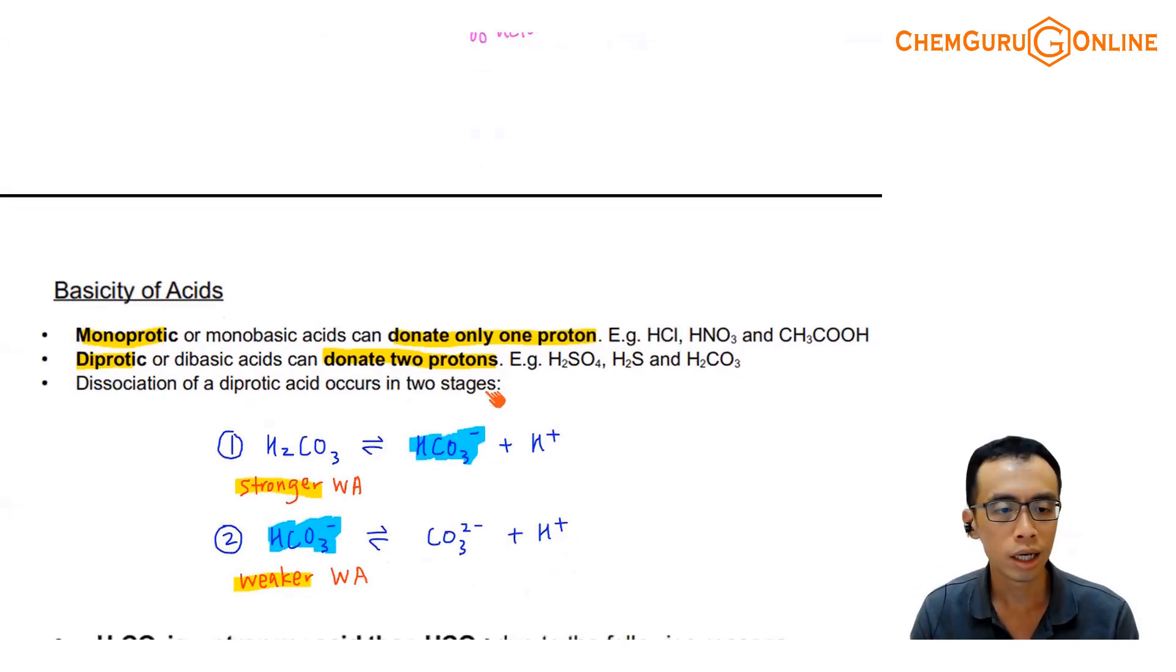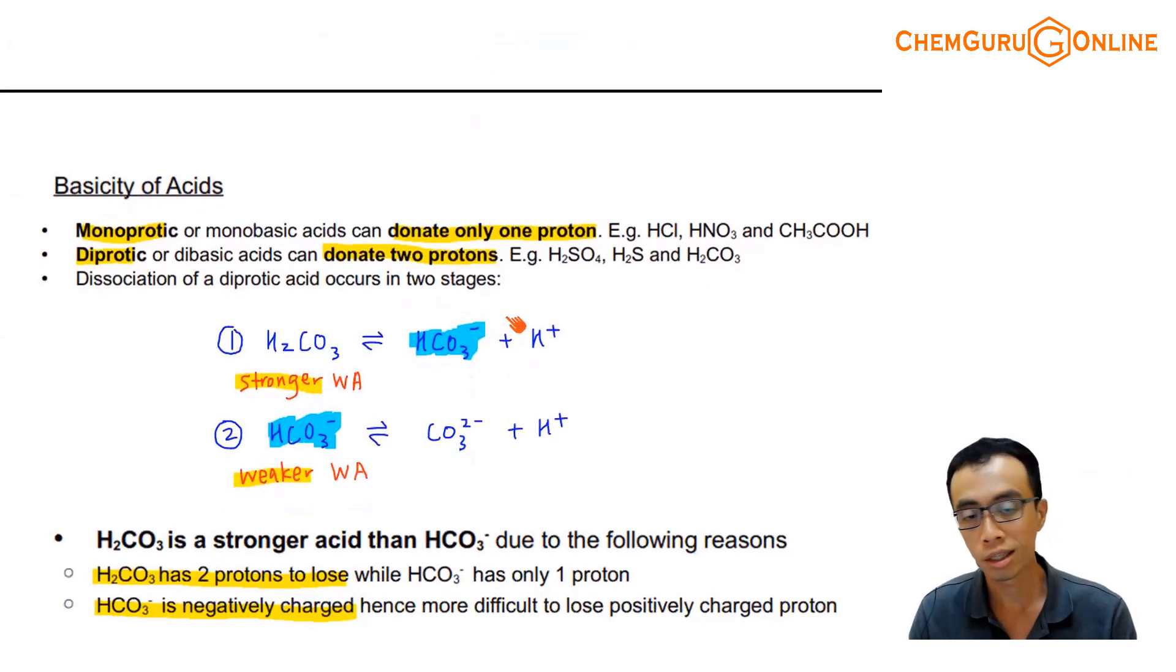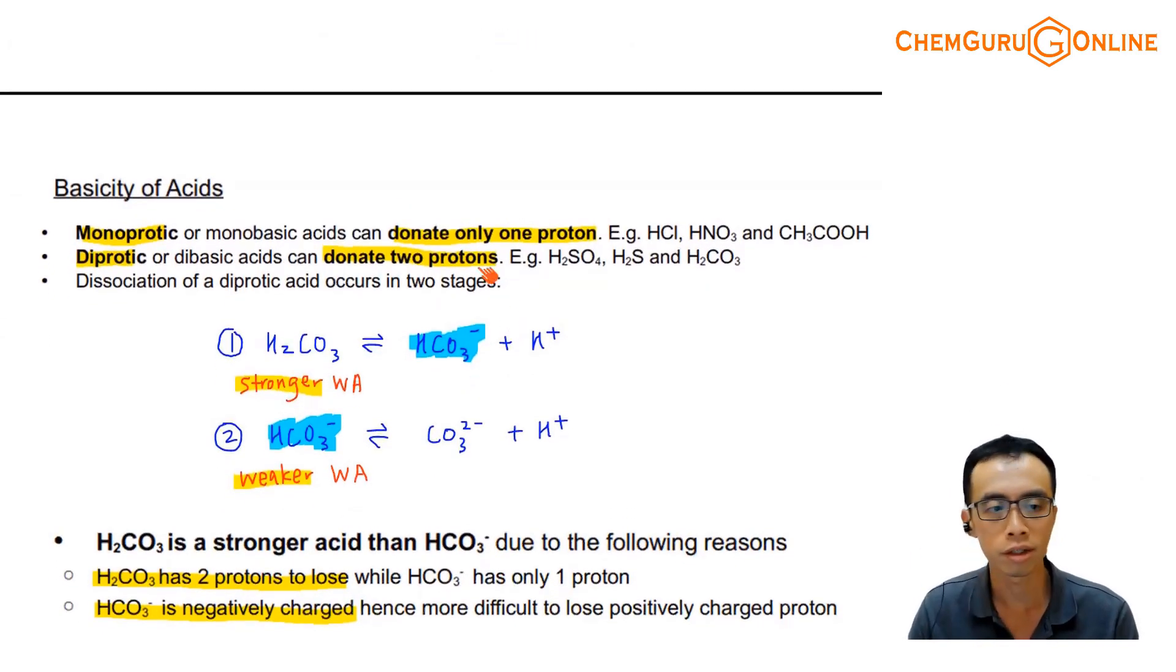Okay, let us run through one more idea involving the basicity of acids. Basicity of acids is how many protons that this guy can donate. If I consider monoprotec or monobasic acids, I can only donate one H+. If it is diprotec or dibasic, I can donate two H+. For triprotec, I can donate three H+.